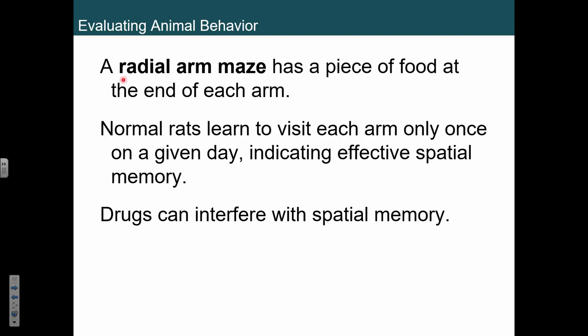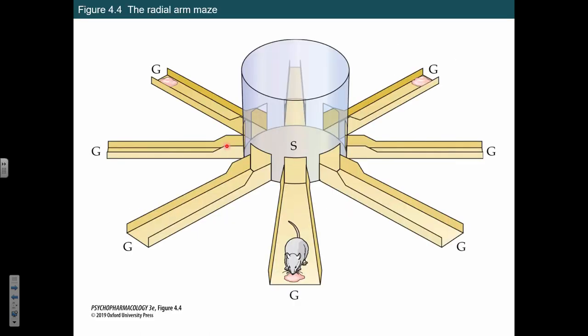There's also the radial arm maze — it's kind of like a T-maze but it's got eight arms instead. You put the rat down in the middle and it doesn't know which way to go. With a T-maze, the rat has a 50% chance of guessing correctly by chance even if it's forgotten everything. But with eight arms, the likelihood of guessing correctly by chance is drastically reduced. So the more options we give the animal, the more sensitive we are in determining whether it's really forgetting or not forgetting.